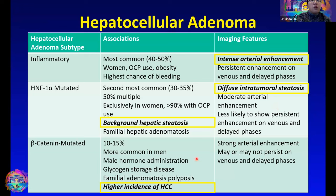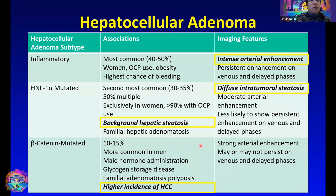The beta-catenin-mutated type is more common in men, patients on male hormone administration, and those with glycogen storage disease. The clinical importance of this type is that it has a higher incidence of HCC. We see strong arterial enhancement that may or may not persist on venous and delayed phase images.